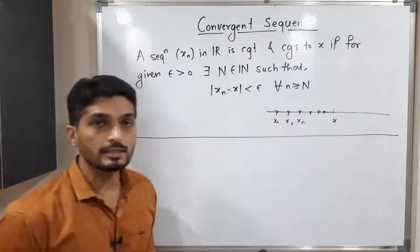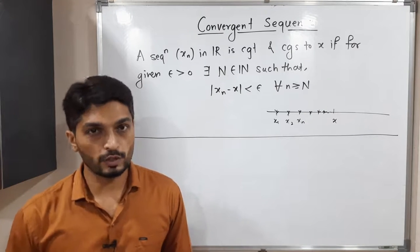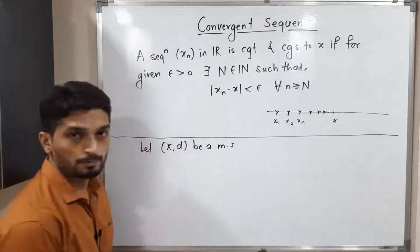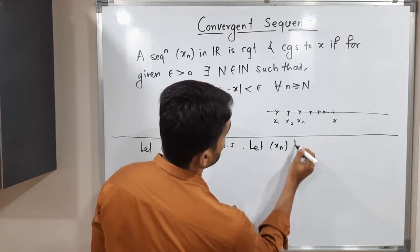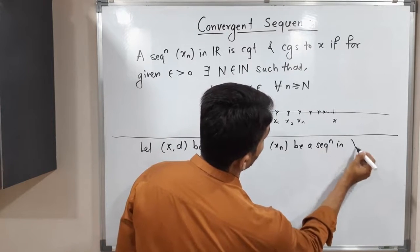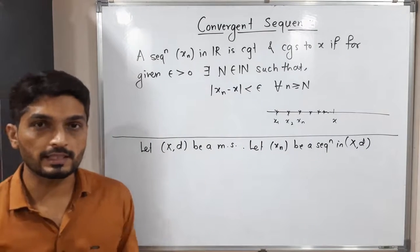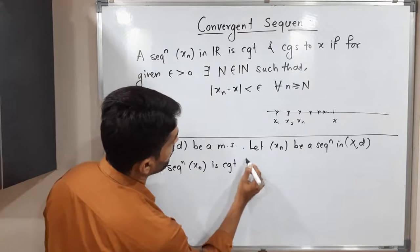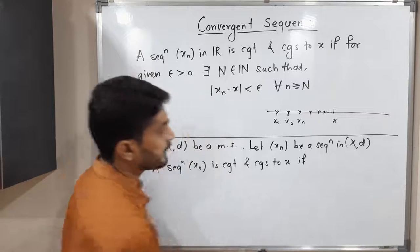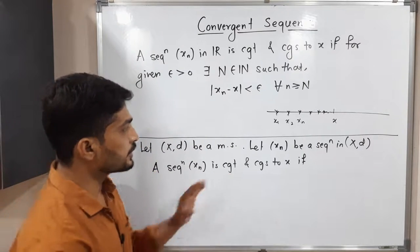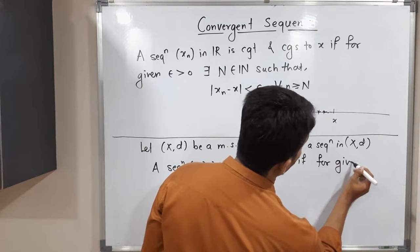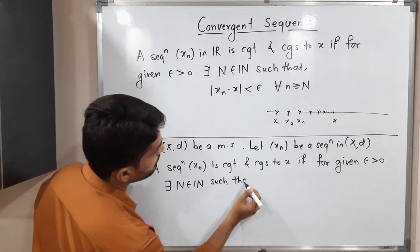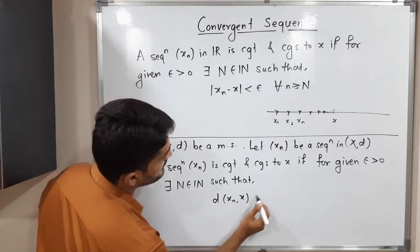Now let us discuss the definition of convergent sequence in a metric space. Let (X, d) be a metric space and let xₙ be a sequence in (X, d). The sequence xₙ is convergent and converges to x if: for given epsilon greater than zero, there exists N belonging to the set of natural numbers such that d(xₙ, x) is less than epsilon.